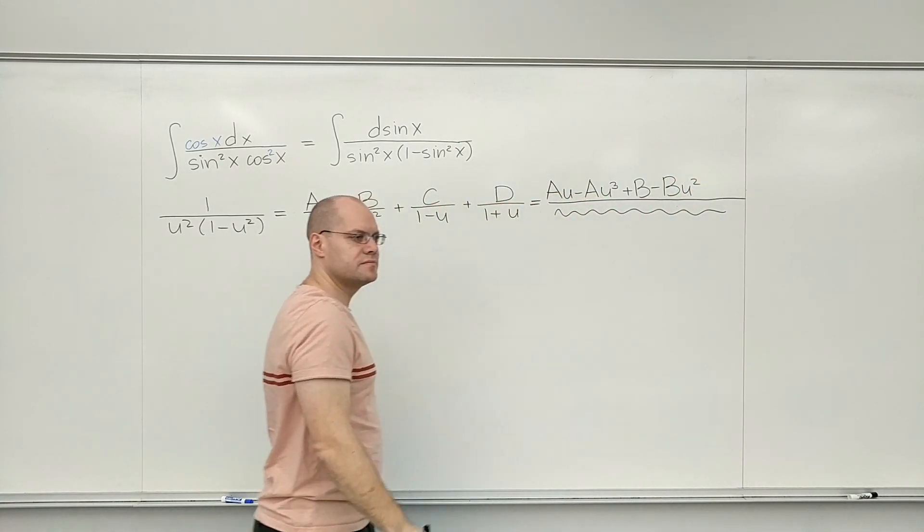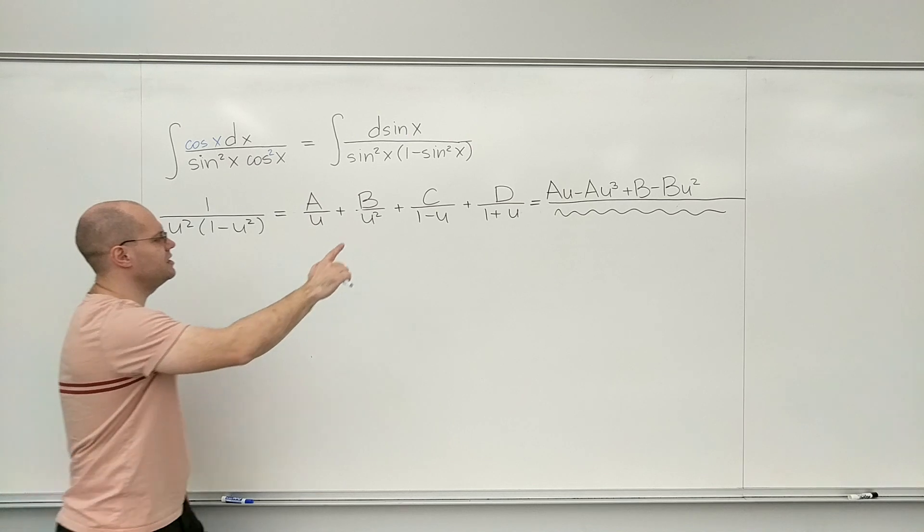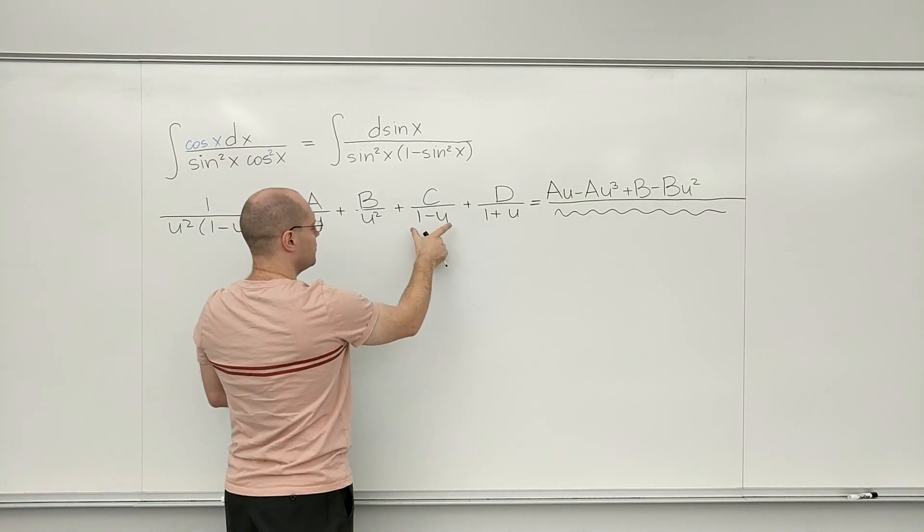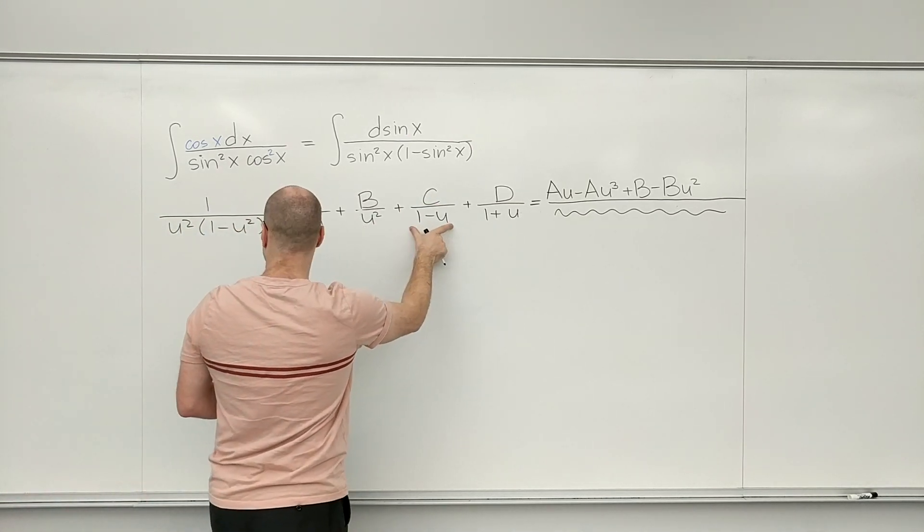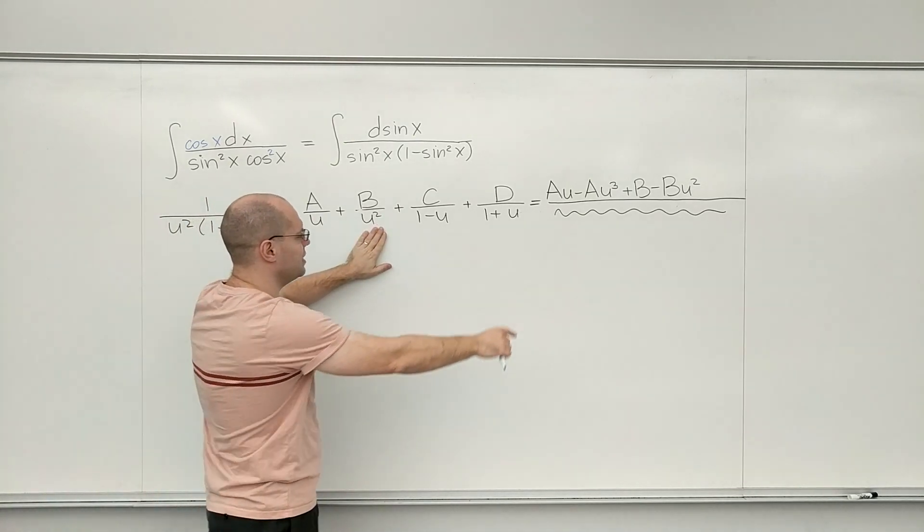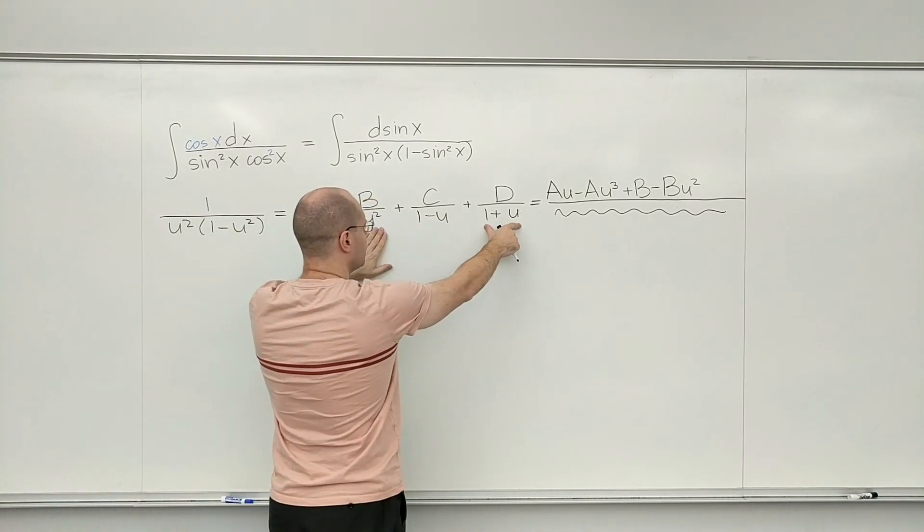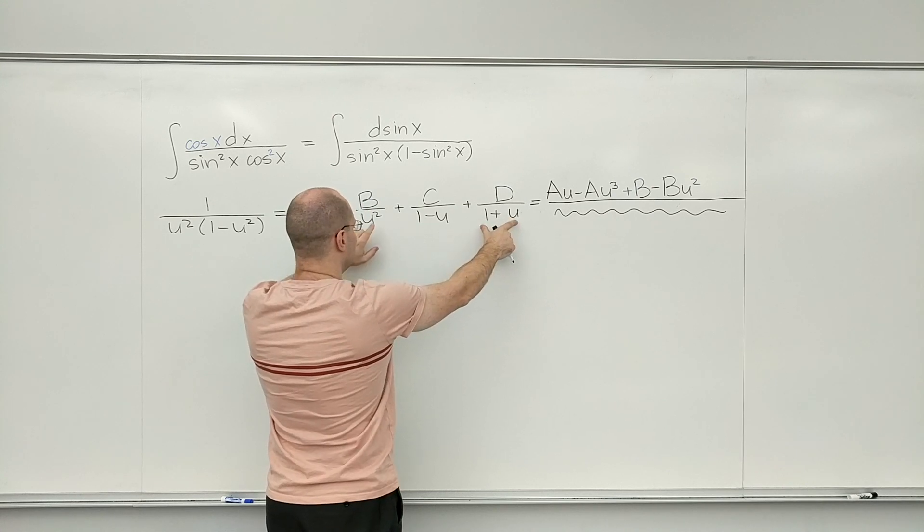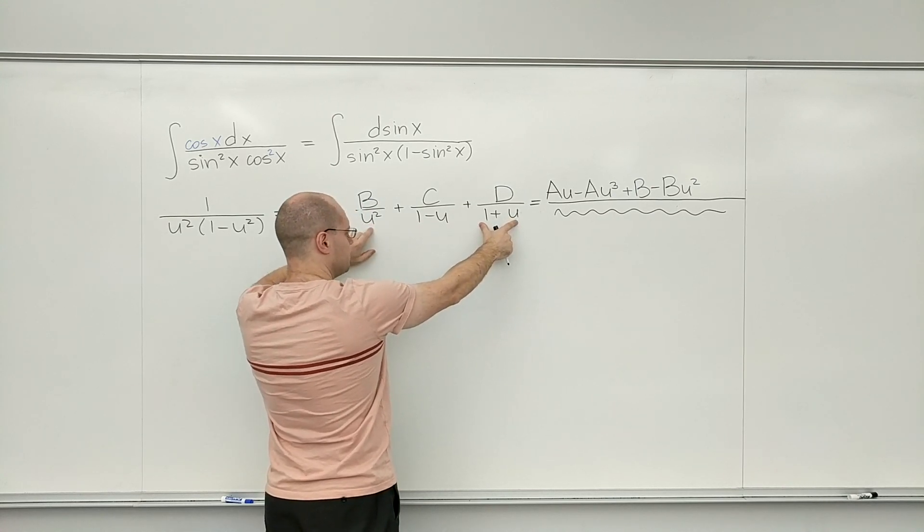Now, on to C. C, when I look at this denominator, I'm asking myself, what's missing from this? And it's definitely u squared times 1 plus u. So C gets multiplied by the product of these two guys. In other words, u cubed plus u squared.